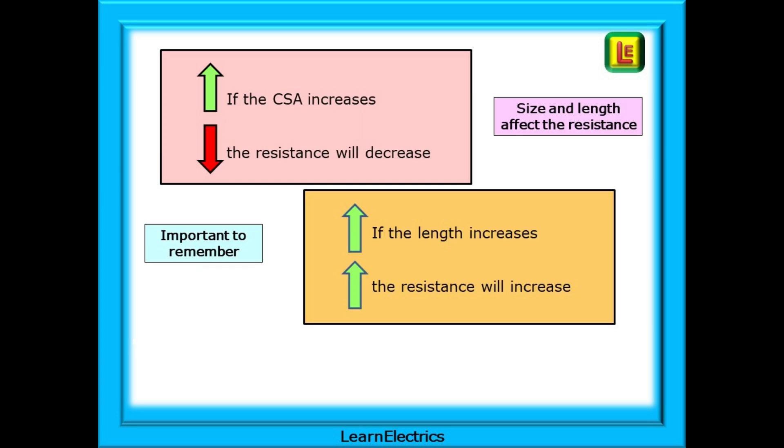First, let's remind ourselves of the relationship between size, length and resistance in conductors. If the CSA increases, then the resistance will decrease. They go in opposite directions. Bigger cable sizes, smaller resistances. And if the length increases, then the resistance will also increase. Longer cables, more resistance.